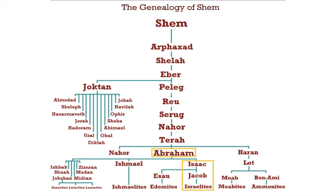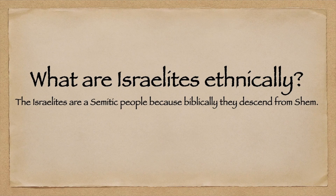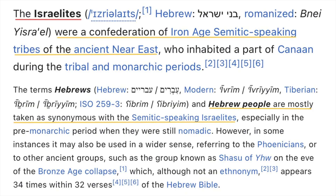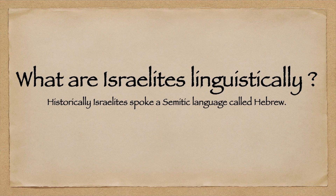So from the lineage, starting with Jacob to Israel, from Jacob to Isaac to Abraham, going from Abraham back to Shem, we see that this lineage is very specific and male-oriented. The Israelites are basically a Semitic people because they descend from Shem. According to outside sources and the academic understanding of the Israelites, they are also Semitic — a confederation of Iron Age, Semitic-speaking tribes of the ancient Near East.